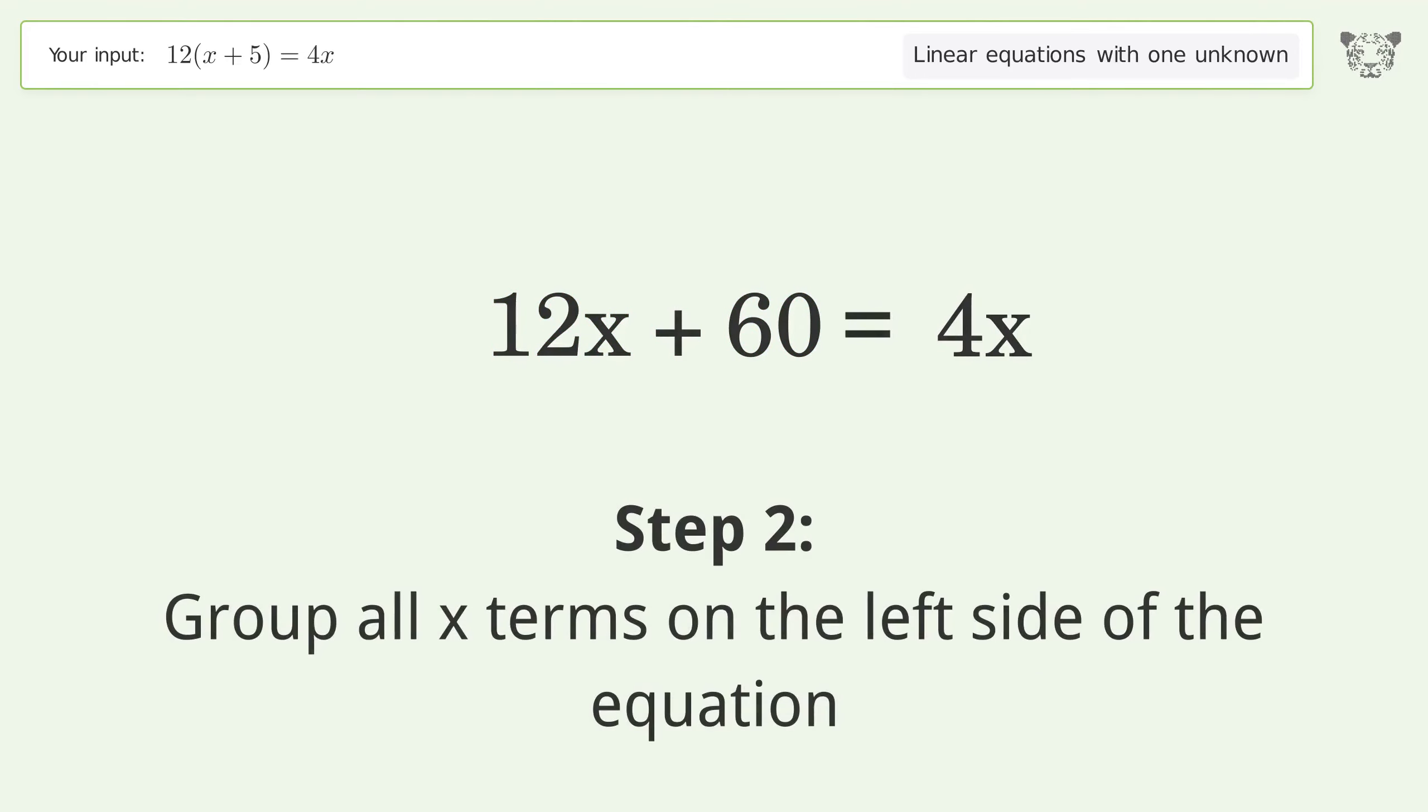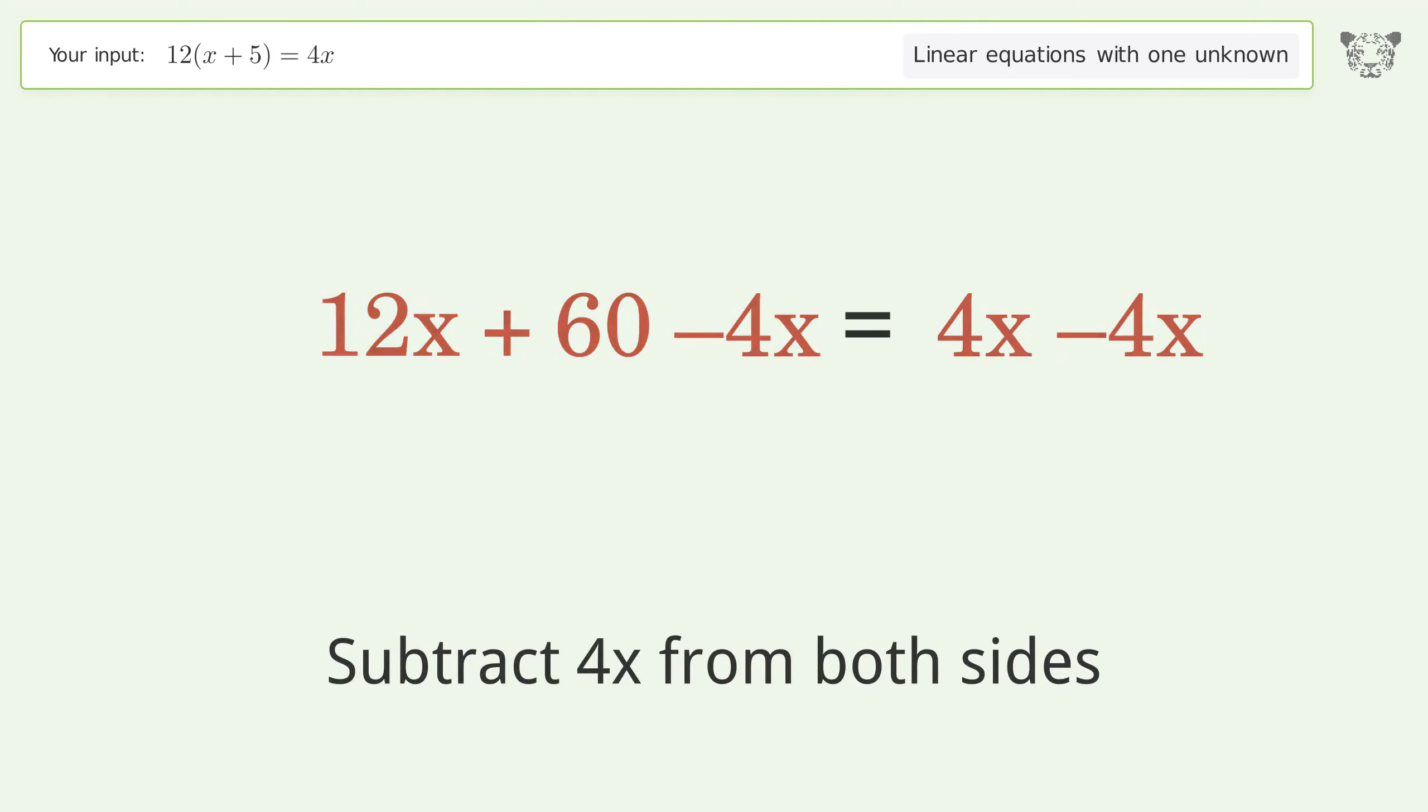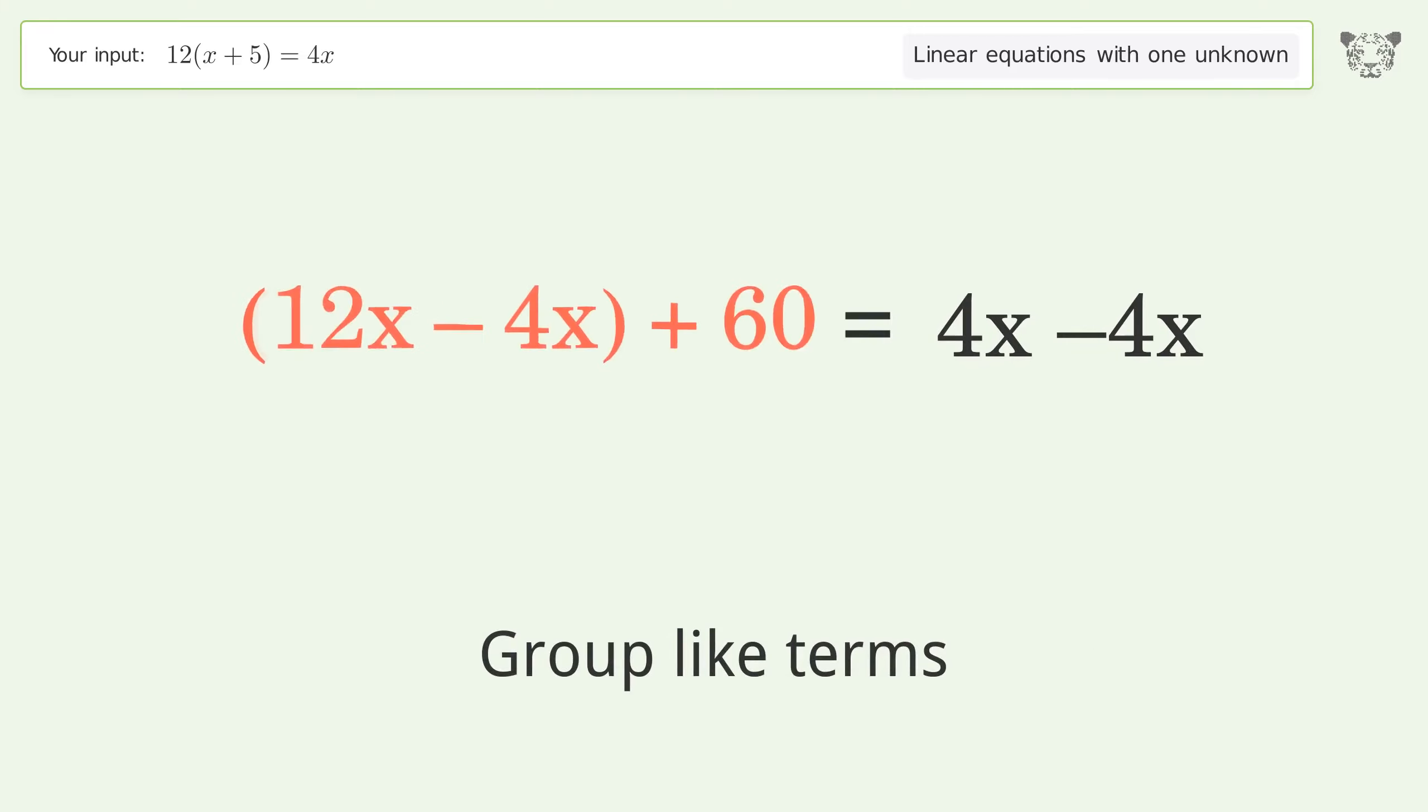Group all x terms on the left side of the equation. Subtract 4x from both sides. Group like terms. Simplify the arithmetic.